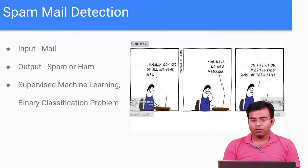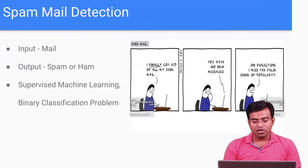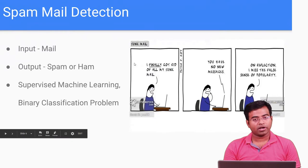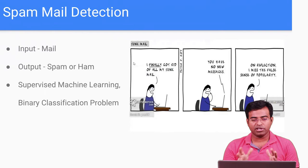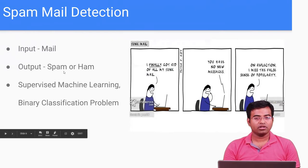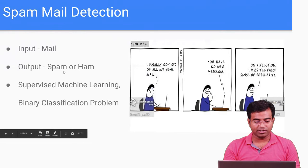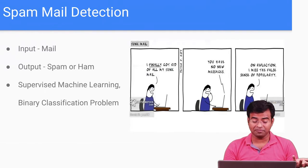Before going into further details, let's see a few examples. For example, with email: automatically a mail arrives and it identifies whether it's spam or ham — ham means it's not a spam mail. This is done using supervised machine learning, which we'll understand later. This is one machine learning application you've seen in your daily life.